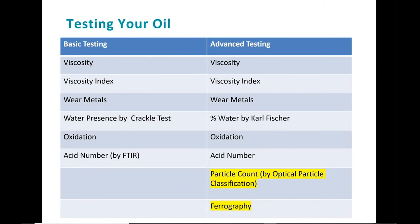Here's a breakdown of basic and comprehensive testing. The basic testing covers wear metals, viscosity, the presence of water, oxidation, and acid number. While this gives a great high-level view of what's going on in your reducer, the more advanced testing can help you dig deeper into results by doing things like particle counts and ferrography.